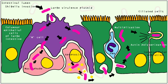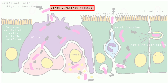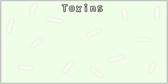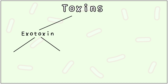Another possible path of entry is through PMN transmigration. This might get a bit confusing, so I have highlighted the 3 important points to remember: Number 1 is a large virulence plasmid, number 2 is entry through M-cells, and number 3 is spread through actin polymerization.